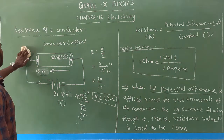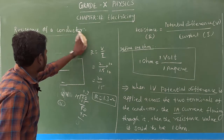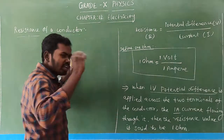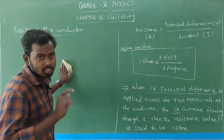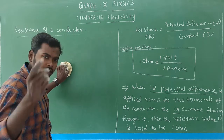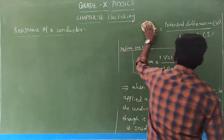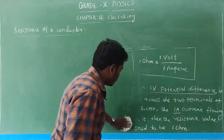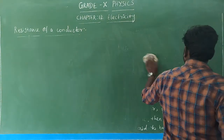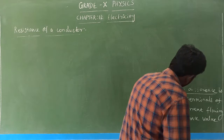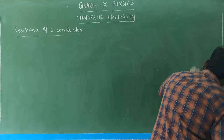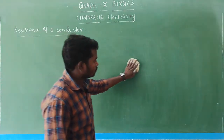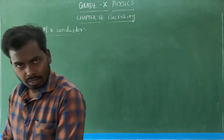Resistance means nothing but the collisions — the opposition to the flow of electrons — that is called resistance. Every conductor has a resistance value, but it differs from one conductor to another. Not only conductors, even insulators have resistance — but that is very, very high resistance.